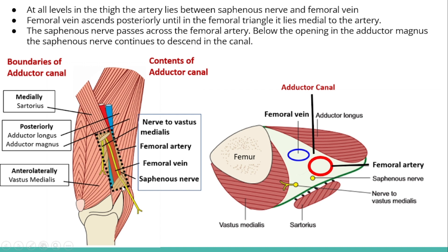Regarding the relations of the femoral artery, femoral vein, and the saphenous nerve within the adductor canal: at all levels in the thigh, the artery lies between the saphenous nerve and the femoral vein, as you can see clearly from this picture. The femoral vein ascends posteriorly until it reaches the femoral triangle, where it lies medial to the femoral artery. The saphenous nerve passes across the femoral artery, and below the opening in the adductor magnus it continues to descend, all the way down to the medial malleolus of the leg.